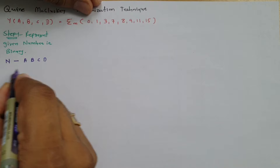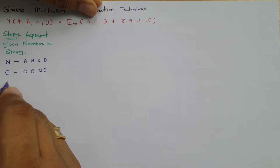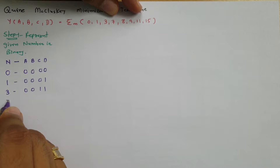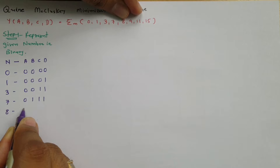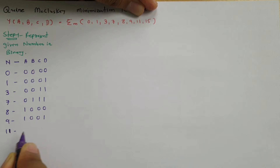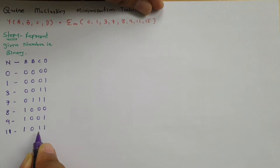So 0 in binary is 0000; 1 in binary is 0001; 3 in binary is 0011; 7 in binary is 0111; 8 in binary is 1000; 9 in binary is 1001; 11 in binary is 1011; and 15 in binary is 1111.